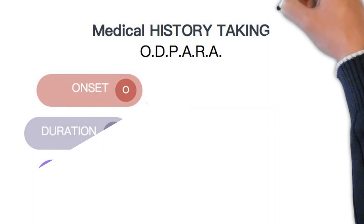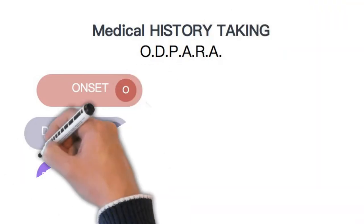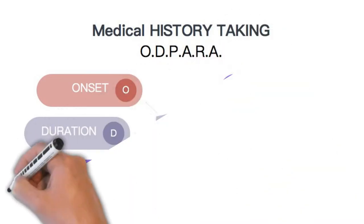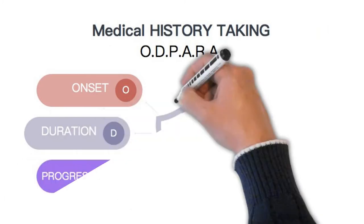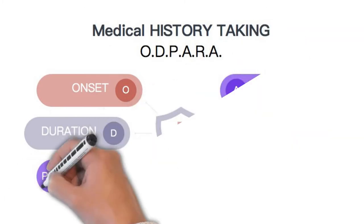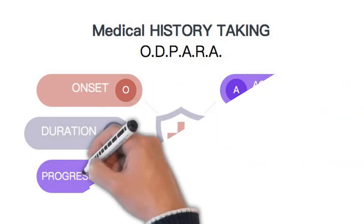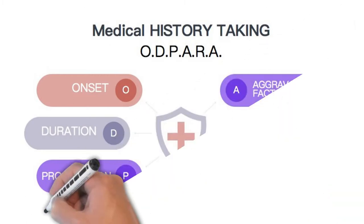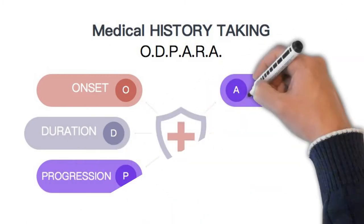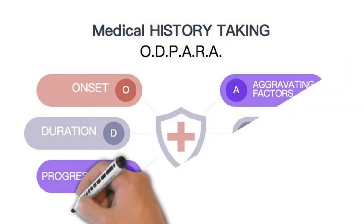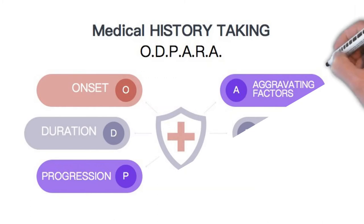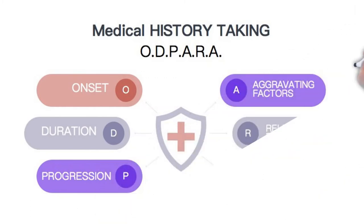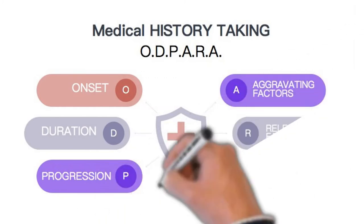Duration: for how long is it present? Progression: since the start of symptoms, is it getting better, worse, or staying the same? Is it the first time, or were there previous episodes? When was the last episode? How long do the episodes last? Determine the frequency of episodes and how often they are occurring.